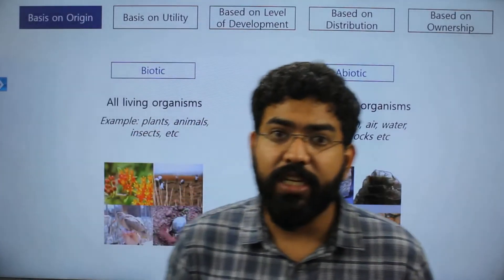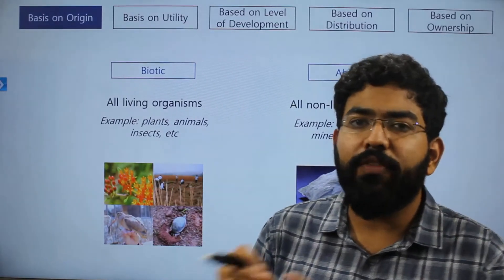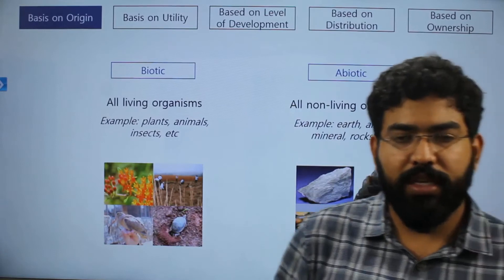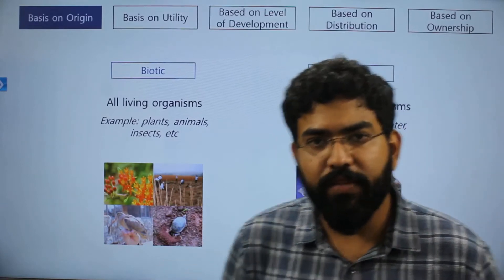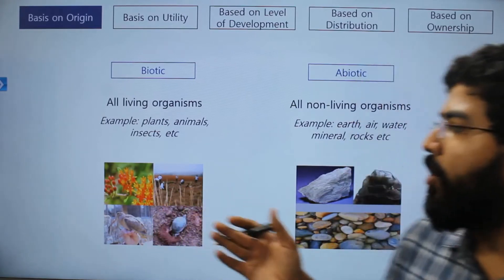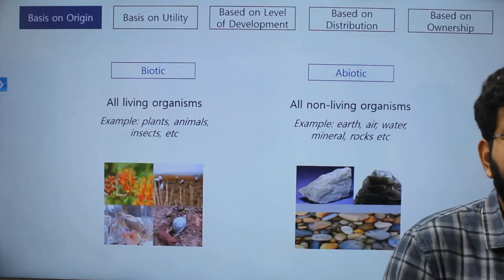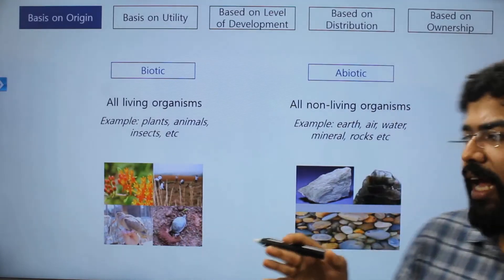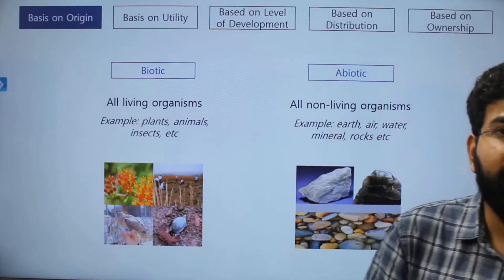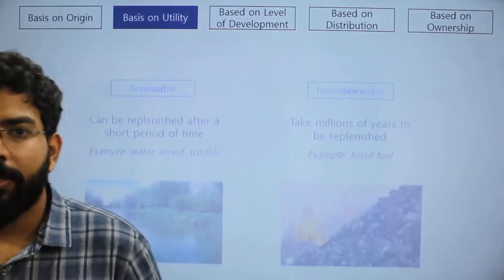Based on origin: if a resource originates from living matter, it is a biotic resource; if it originates from non-living matter, it is an abiotic resource. So plants, animals, and insects are your biotic resources, while minerals, air, and water are non-living — those are abiotic resources.